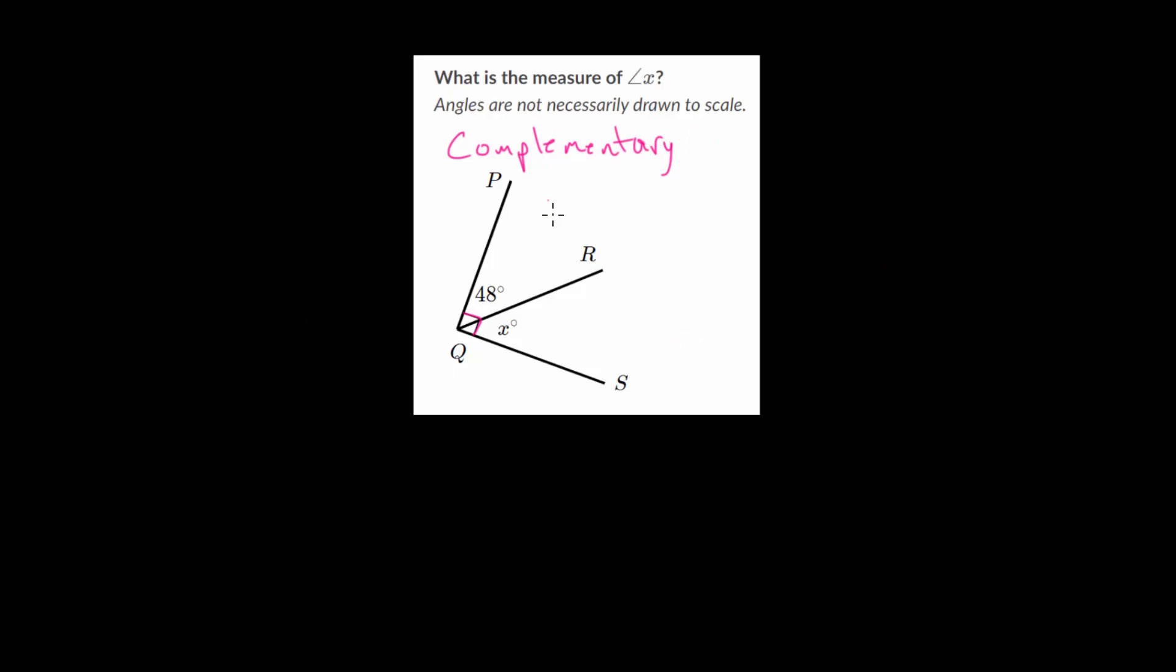And since they're complementary, we know that if we add them together, they're going to be equal to 90 degrees. So this angle PQR plus this angle X or RQS will add up to 90. So we can set up that equation: 48 degrees plus angle X equals 90 degrees. And we can solve this. Let's just subtract 48 on each side of the equation. So taking away 40 brings us to 50, taking away 8 more brings us to 42.